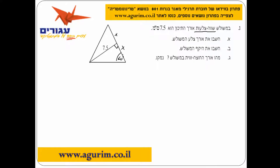נמצא את x - את התיכון, כלומר חצי מהצלע. התיכון חוצה את הצלע לשני חלקים שווים. נמצא את x, נכפול ב-2, נקבל את צלע המשולש.